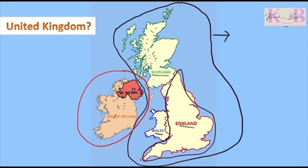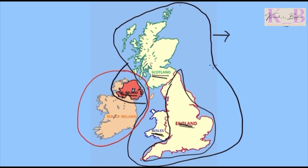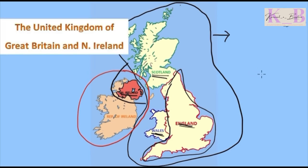When we combine Northern Ireland with Great Britain, it is called the United Kingdom. So the United Kingdom consists of four countries: Scotland, England, Wales, and Northern Ireland. Therefore, the full name of the United Kingdom is the United Kingdom of Great Britain and Northern Ireland.